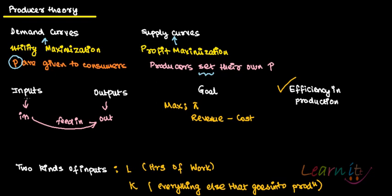Inputs are something which go into the production process — they feed into the production process and generate outputs. What you get is basically the outputs. The goal of the producer is to maximize profits. Profit is revenue minus cost, and how the producer maximizes profit will be our main argument in the next recordings.